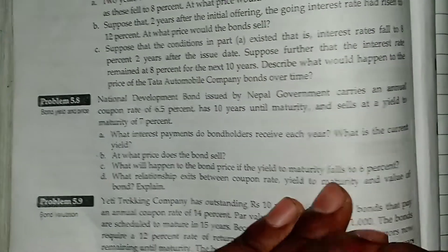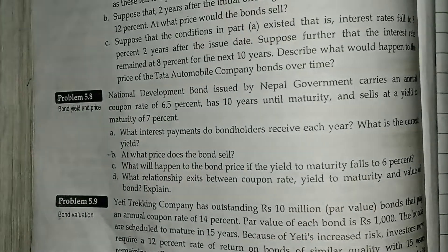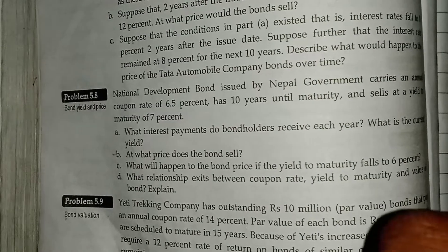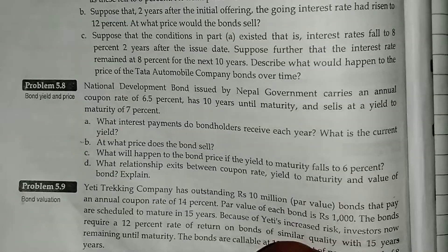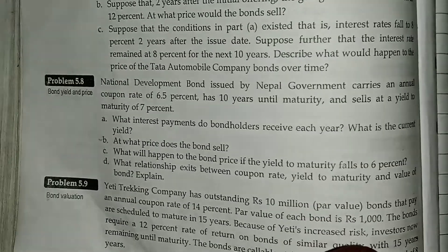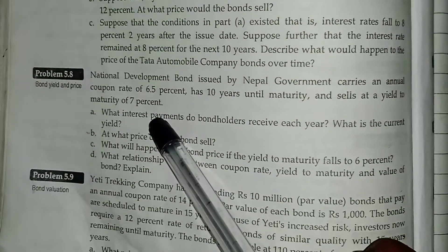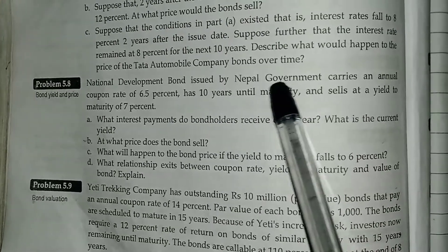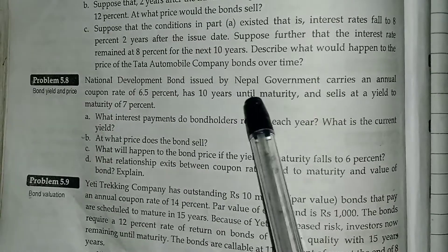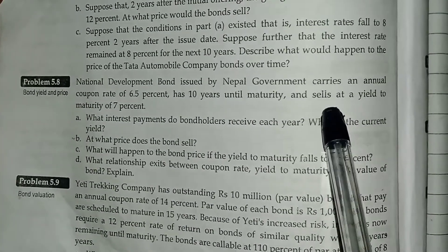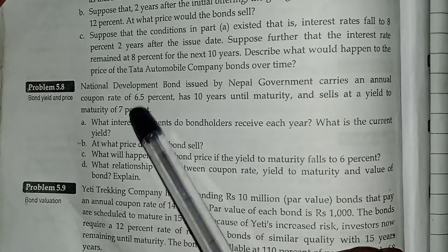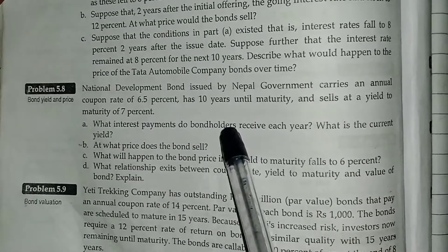Hello everyone, I am going to talk to you about this new episode on bond valuation, which is the current yield and YTM. I'm going to solve problem 5.8. The National Development Bond issued by Nepal Government carries an annual coupon rate of 6.5%, 10 years until maturity, and sells at YTM of 7%. Coupon rate is 6.5% and maturity period is 10 years.